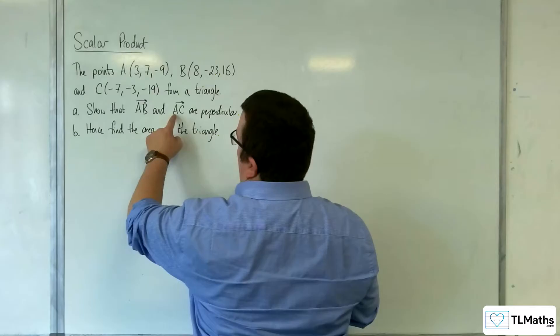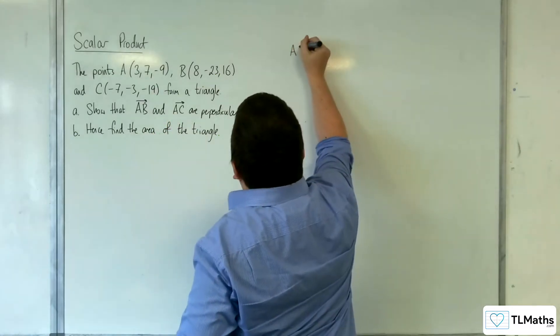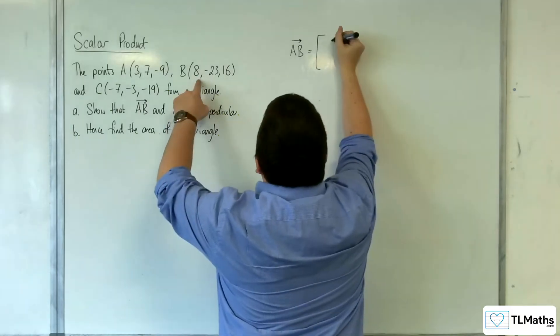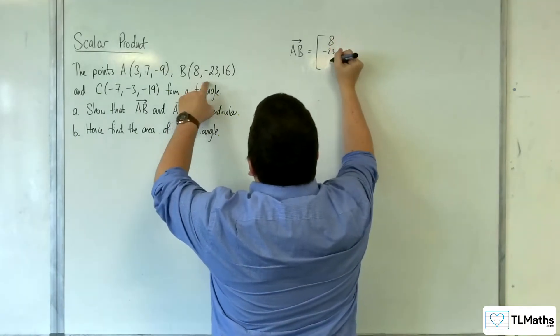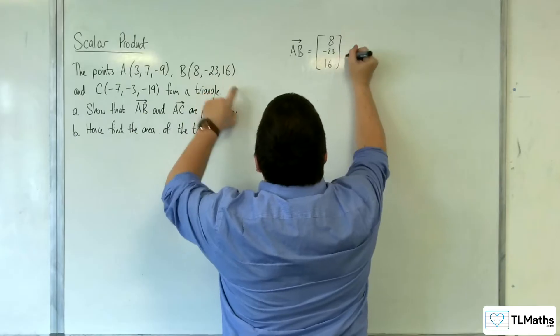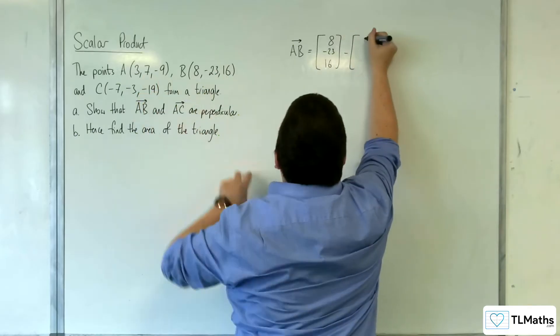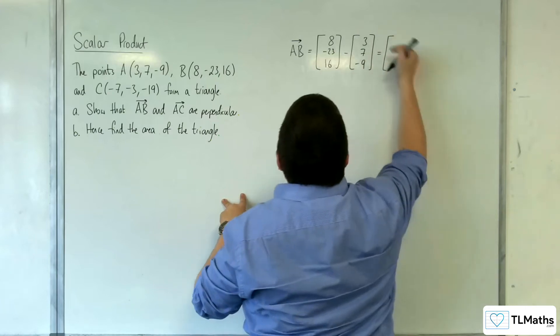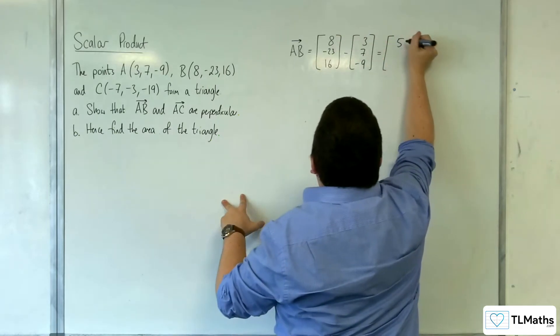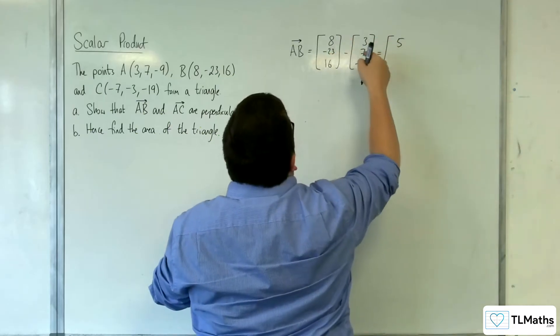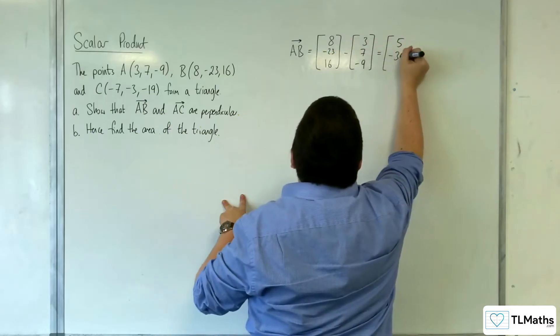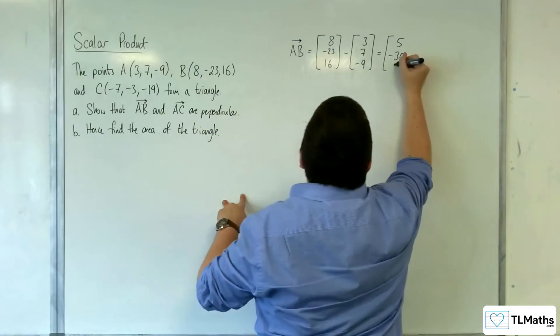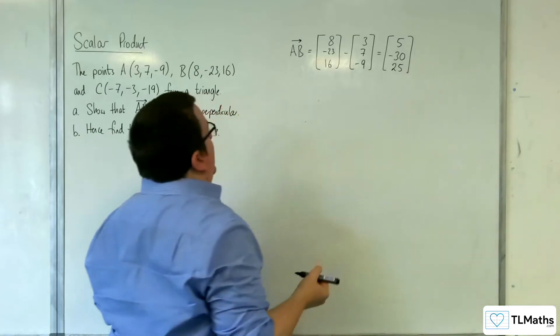We're going to need to work out the vectors AB and AC first. So AB is going to be OB minus OA. So 8 minus 3, minus 23, 16, take away 3, 7 minus 9. So what do we have? 8 take away 3 is 5, minus 23 take away 7 is minus 30, and 16 take away minus 9 is going to be 25. So that's the vector AB.